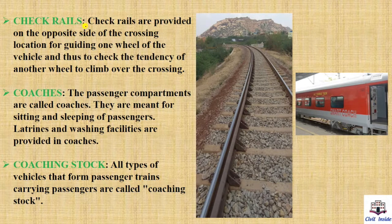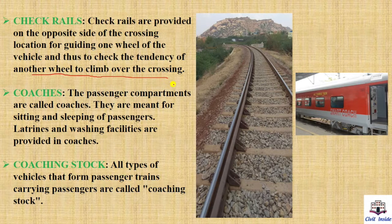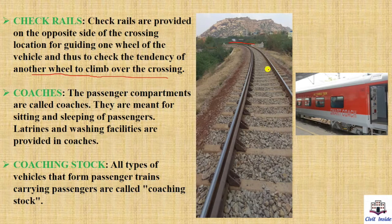Next, check rails. Check rails are provided on the opposite side of the crossing location for guiding one wheel of the vehicle, and thus to check the tendency of the other wheel to climb over the crossing. There is a crossing, and on its opposite side a check rail is provided to guide the wheel properly.